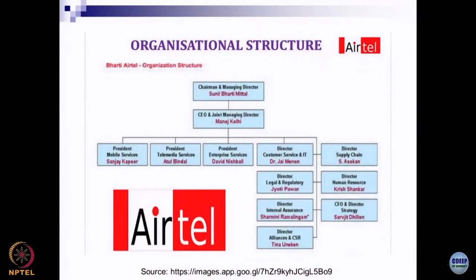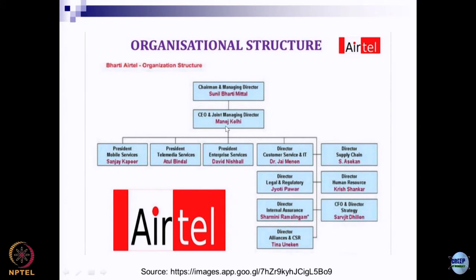Now let us look at another organization structure — this is of the famous telecommunication company Airtel. You can see the chairman and managing director, then there is a CEO and joint managing director. Below the joint managing director there is a president of mobile service, president of telemedia service, enterprise services, customer services, supply chain, and so on. What do you make out of this diagram?